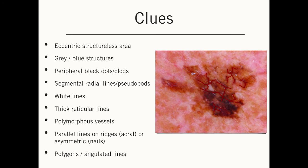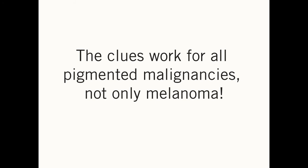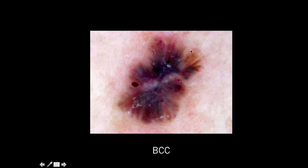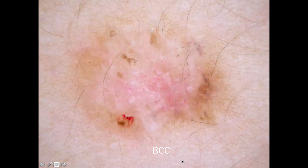If you see any of those clues — just one — this is enough to decide to biopsy the lesion at hand. One very nice thing is the clues do not work only for melanoma, but for all pigmented malignancies of the skin. Here we have a basal cell carcinoma with an eccentric structureless area and segmental radial lines. Here is a chaotic lesion with white lines and blue structures — we cut it out and it is a basal cell carcinoma. And again, a chaotic lesion with white lines and gray structures — also a basal cell carcinoma.